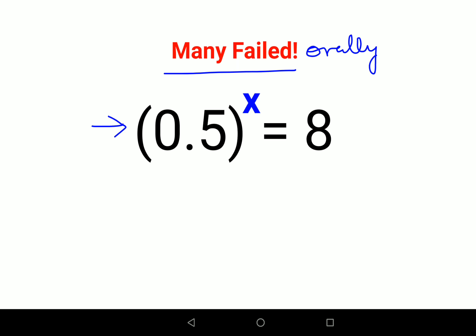You have to remember that 0.5 can also be written as one half. So the whole thing becomes one-half raised to x equals 8, and instead of 8 I can also write this as 2 raised to 3.